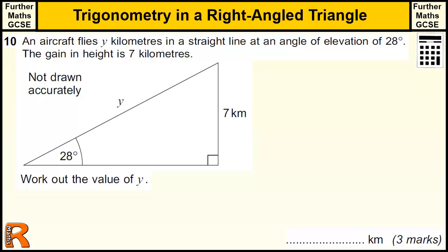FeverMaths GCSE Level 2 qualification, trigonometry in a right-angled triangle. Standard fare, admittedly this is the one where you've got to find the hypotenuse, which is a little bit trickier. You've got to be a little bit careful now.